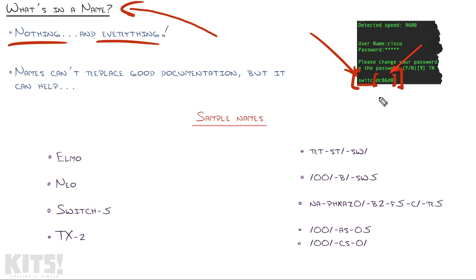So if we happen to log in, I could walk around looking at different switches until I find DC86D0. There's no replacing good documentation no matter what naming convention you use. However, a good naming convention can really help.